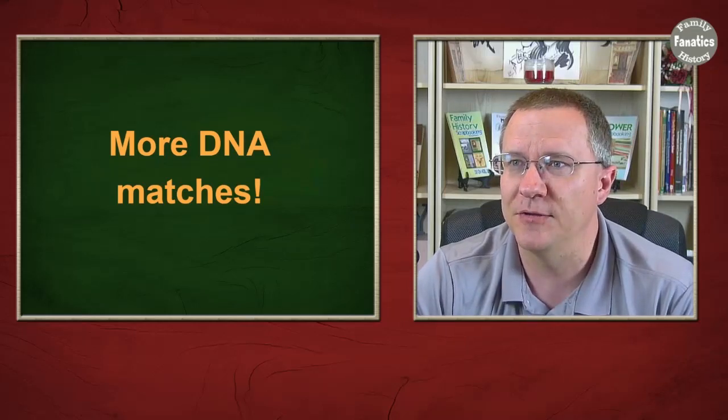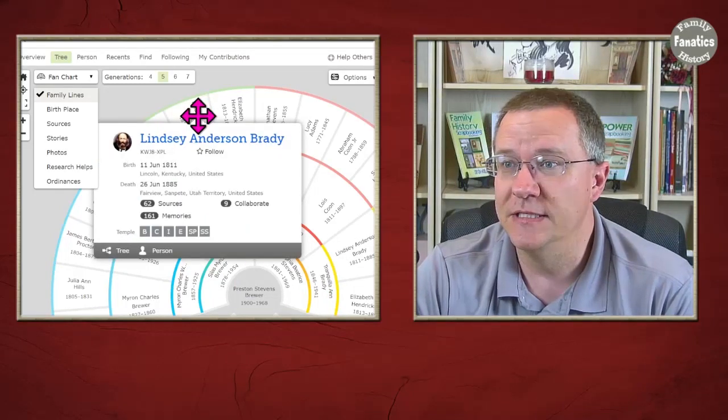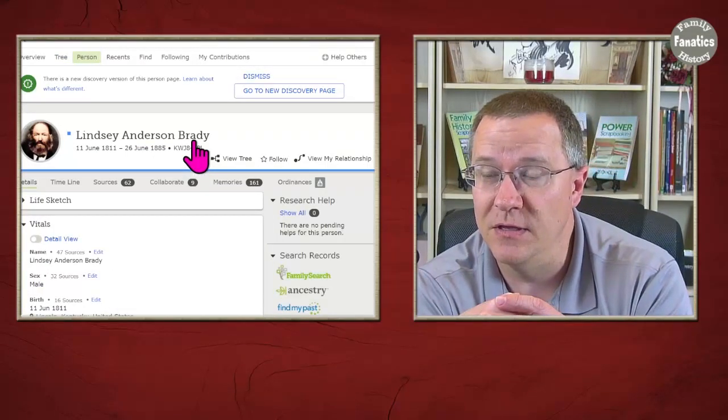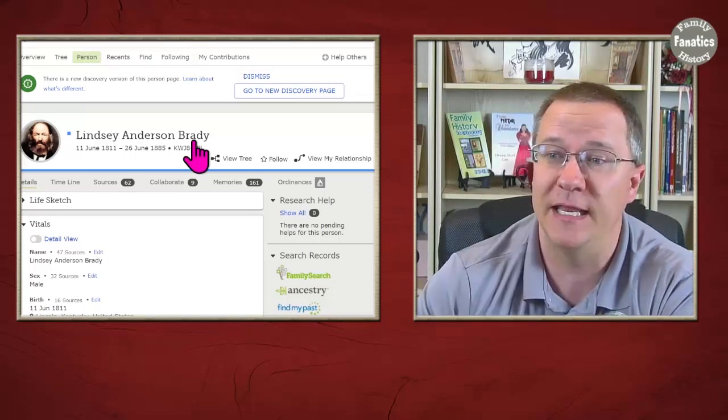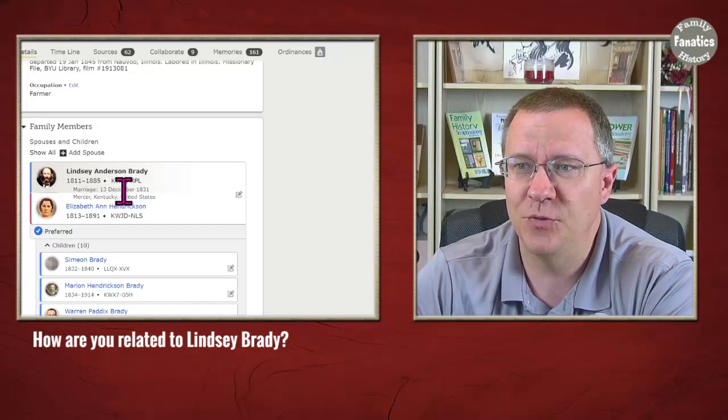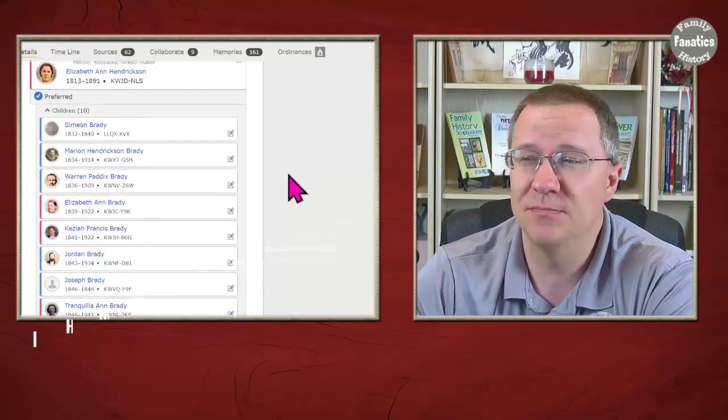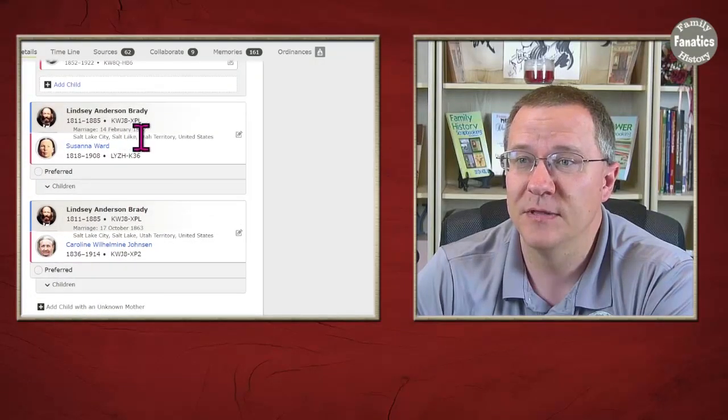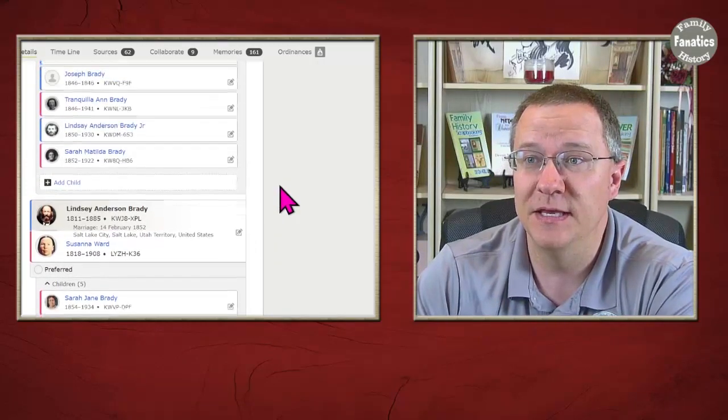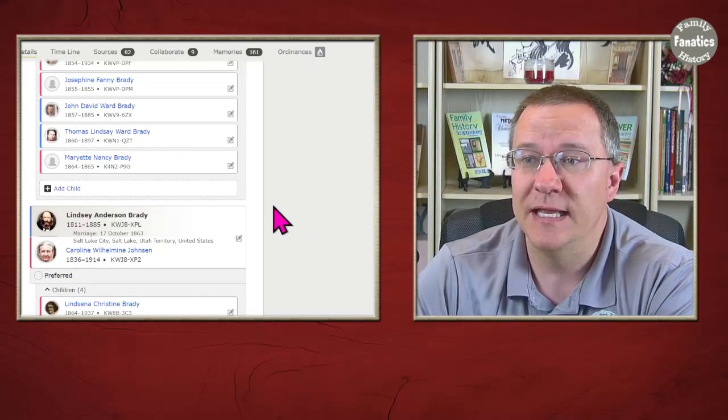Now in my family tree I have an ancestor, Lindsey Anderson Brady, and he was a polygamist. He's part of the Mormon pioneers that came to Utah and he had at least three wives. If we scroll down we can see that he had his first wife married in 1831 and they had 10 kids, and then his second wife married in 1852 while he was still married to his first wife. You can see that because of when some of the kids were being raised there. And then his third wife he married in 1863.